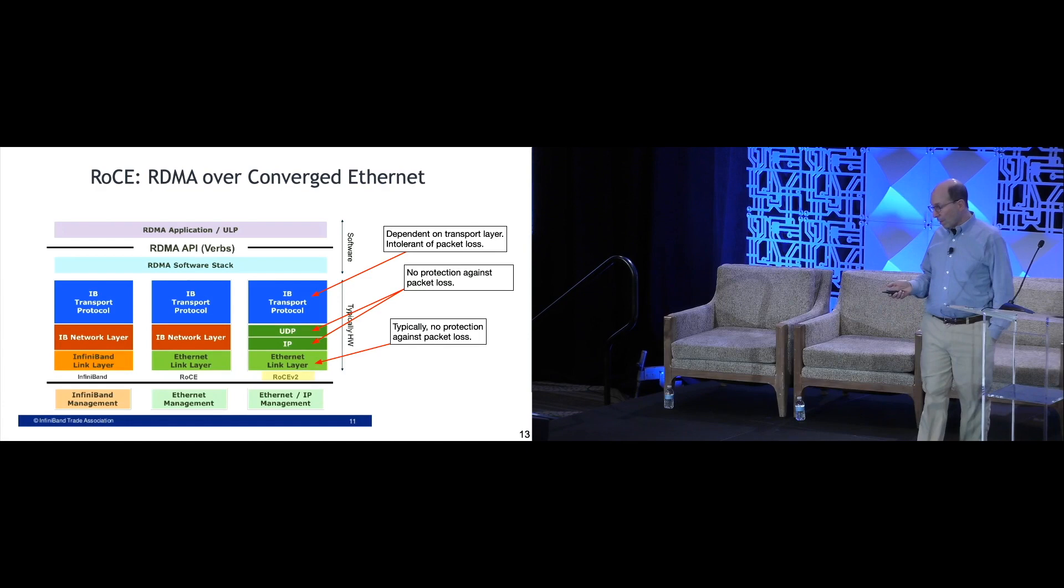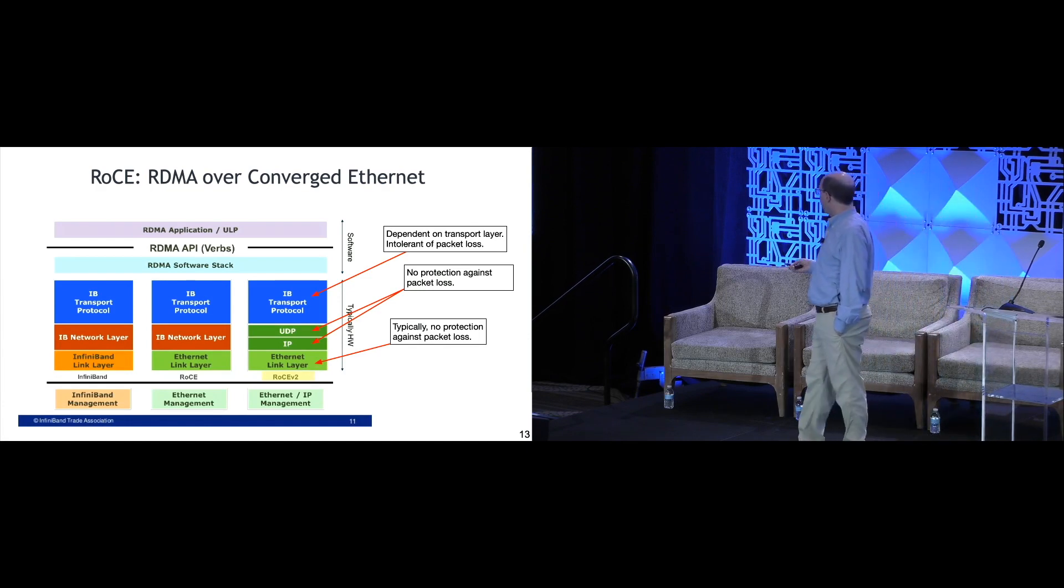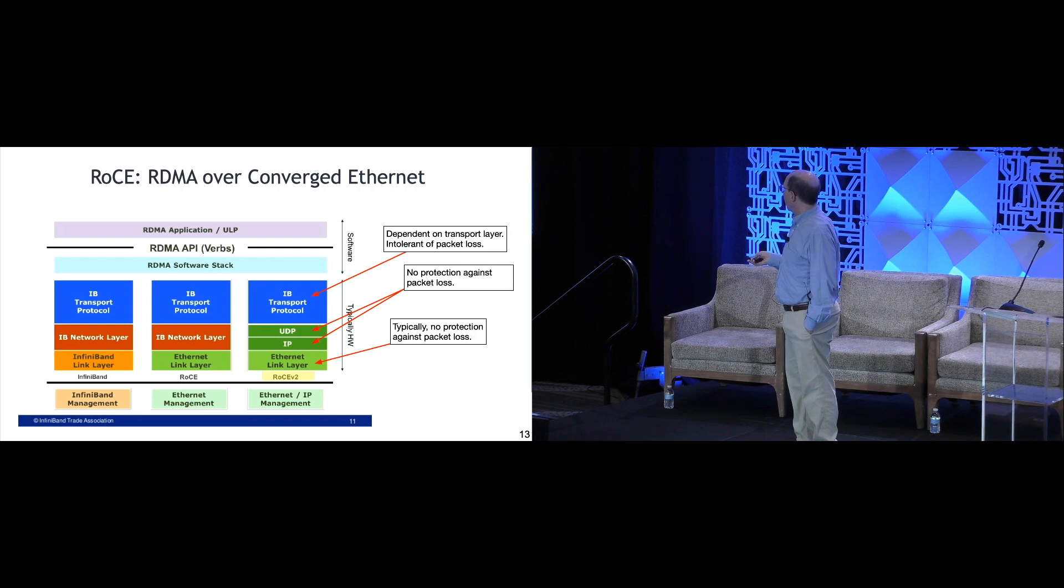You can see in this picture the evolution from three different stacks here, from this InfiniBand transport protocol in the old days going over an InfiniBand link layer, and then with RoCE the InfiniBand link layer being replaced by Ethernet link layer. More recently, RoCE V2 gets rid of the IB InfiniBand network layer and replaces it with UDP over IP. This is the current implementation of RoCE, this V2.